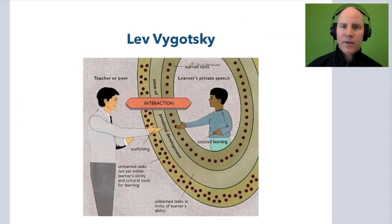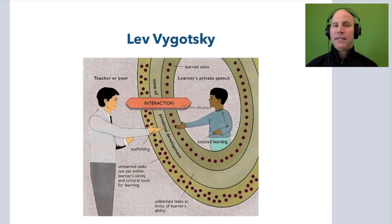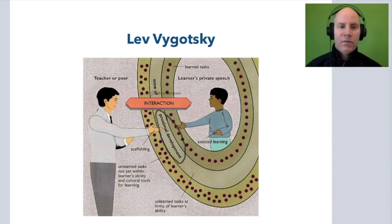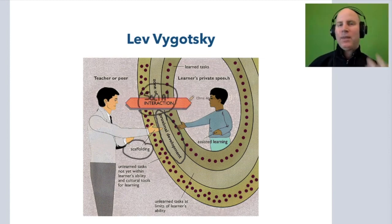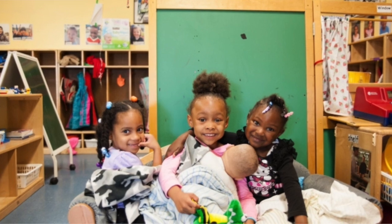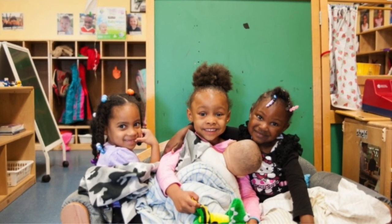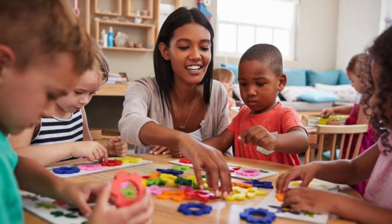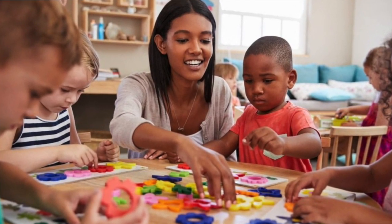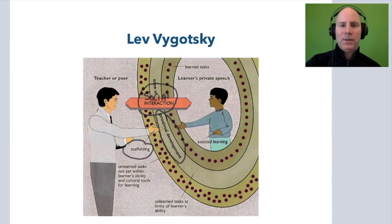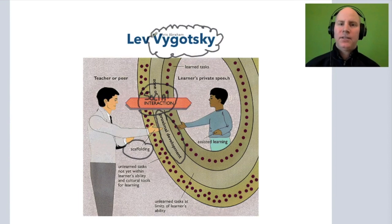What about Vygotsky? How does learning happen through Vygotsky? We have the zone of proximal development, teacher scaffolding, and social interaction. When we think about Vygotsky and learning, learning is occurring through social interaction. It's still experienced through the environment, but it's that piece of a guided other — supporting, helping, clarifying, and assisting with the learning. So when you think Vygotsky, think learning through social interaction.